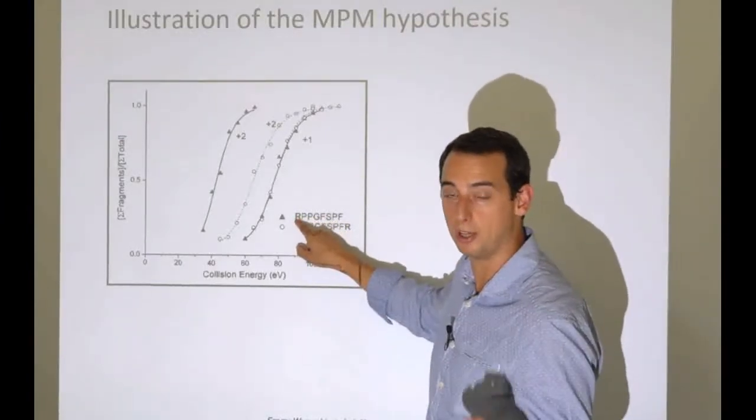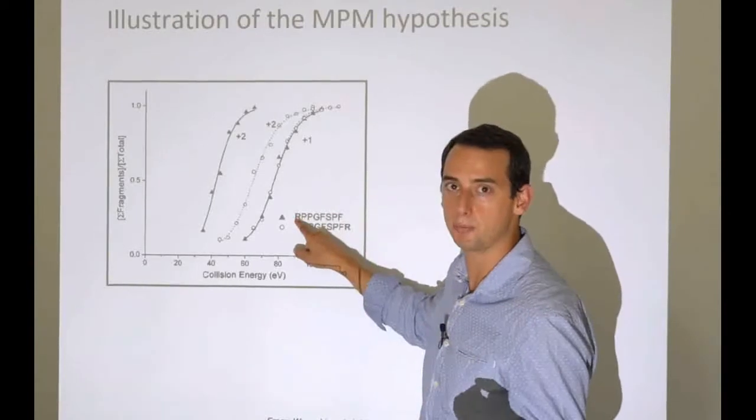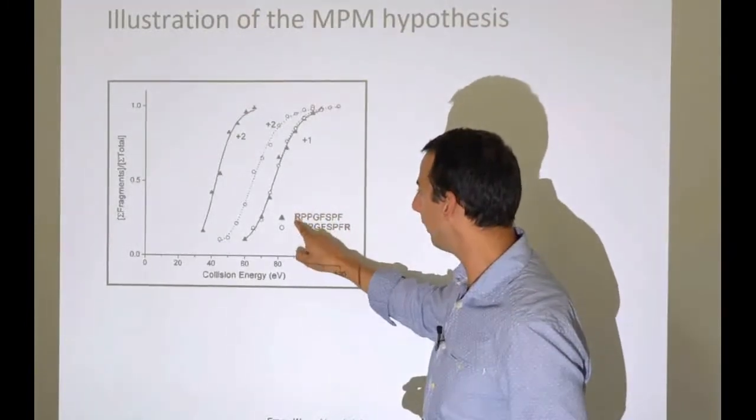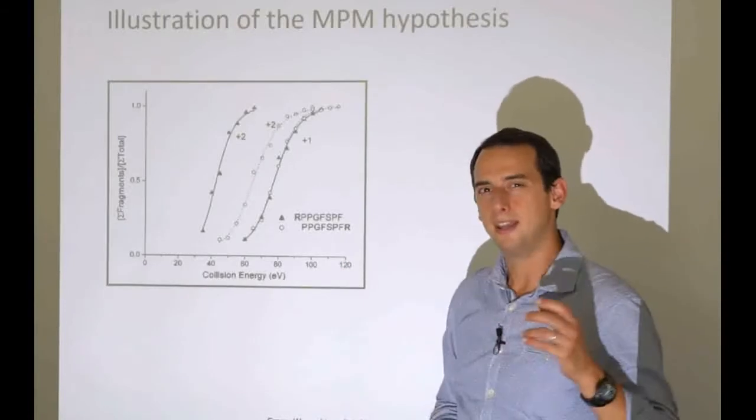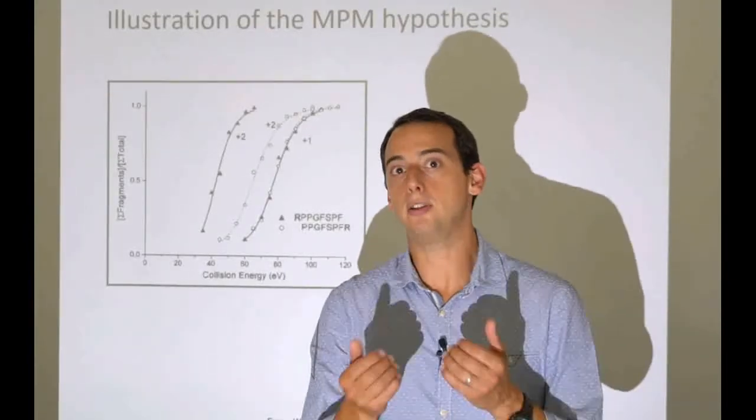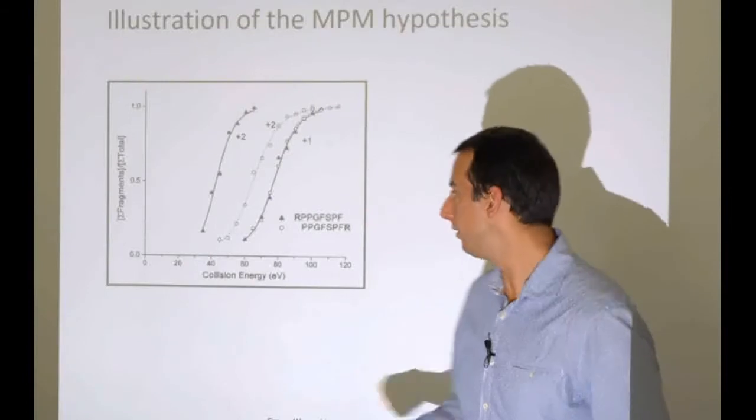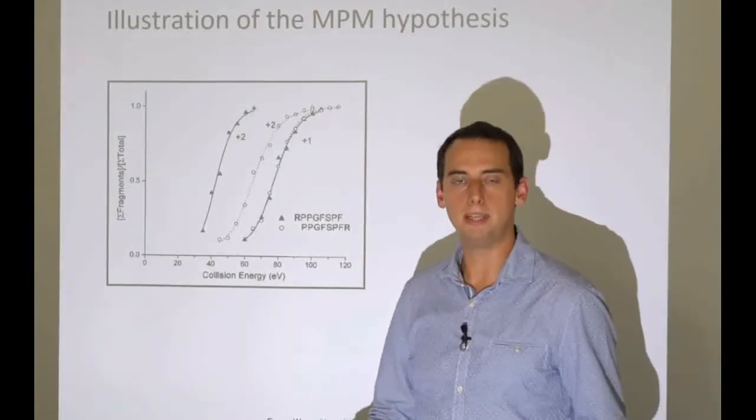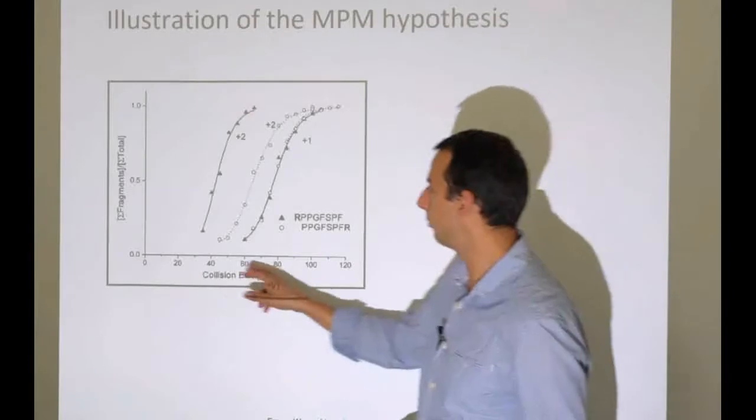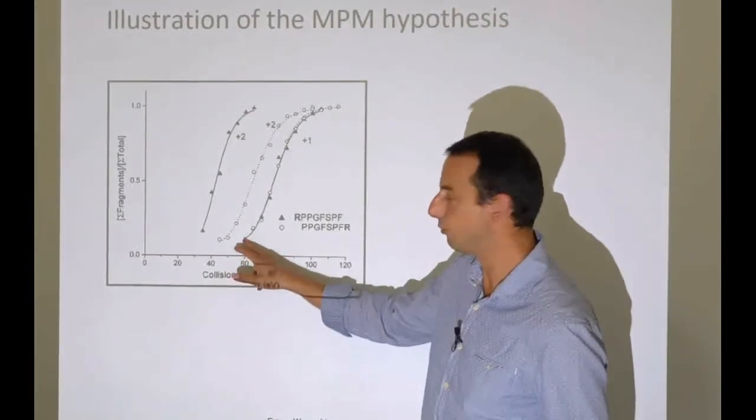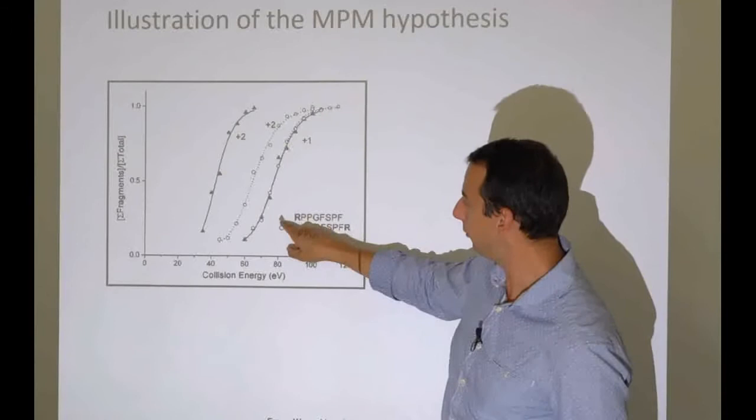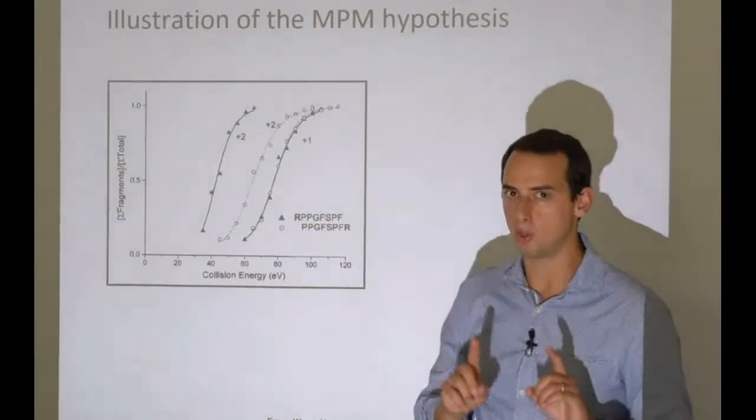The singly charged proton is going to be at the arginine—it's going to hold on to that proton very tightly at that PKX of 12. The proton is not very mobile; it's happy on the arginine and not going anywhere. It will be very difficult to break other bonds because the proton never gets to these places. We see we need to start at 60 electron volts before we see fragments, and go up to almost 120 to get 100% coverage. No surprises—the hypothesis holds.